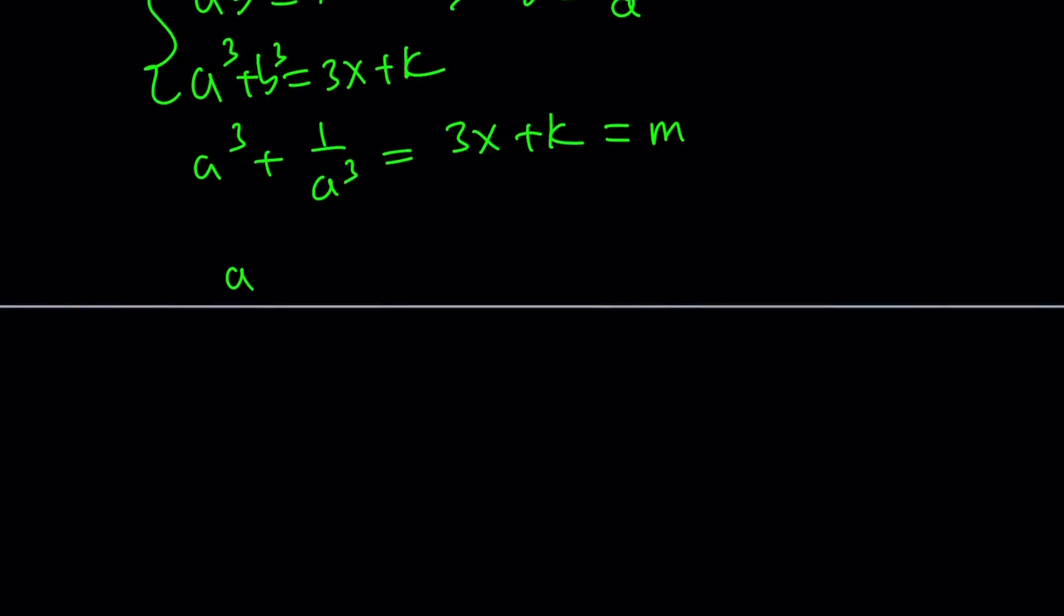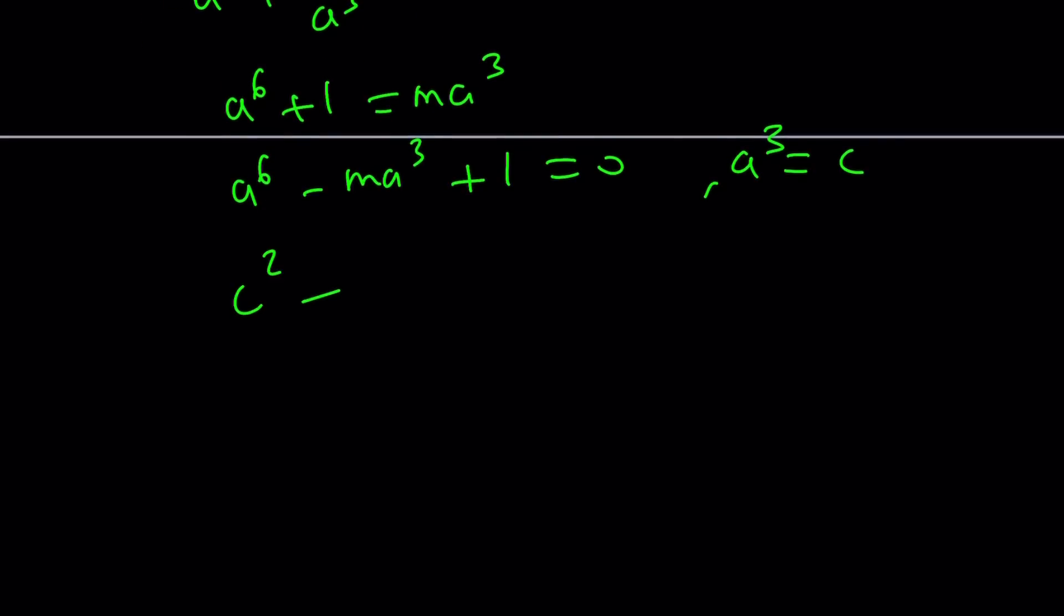And then, from here, you're going to get a to the 6 plus 1 equals m times a cubed. A to the 6 minus m a cubed plus 1 equals 0. By setting a cubed equal to c, you're going to get c squared minus mc plus 1. So, you get this quadratic equation, very easy to solve. And then, c is equal to a cubed. You just cube it to find the a, and so on and so forth.